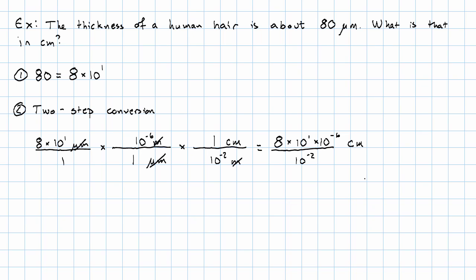Okay. Well then let's just do arithmetic with those powers of 10. 10 to the 1 times 10 to the negative 6 is 10 to the 1 plus negative 6. So that's 10 to the negative 5. 10 to the negative 5 over 10 to the negative 2 is 10 to the negative 5 minus negative 2. That's 10 to the negative 3. So just working out these powers of 10, this works out to 10 to the negative 3. I'm left with 8 times 10 to the negative 3 centimeters.